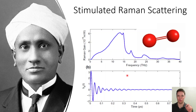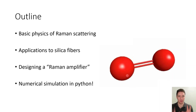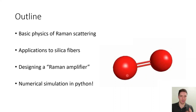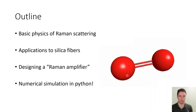In this video, I'm first going to go over the basic physics of the Raman effect using the humble H2 molecule as a reference point. Then we're going to expand that model to the case of an amorphous silica glass lattice, and then we're going to see how to design a fiber optic amplifier that exploits the Raman effect. Finally, we're going to see a numerical model of this amplifier implemented in Python, so stay tuned for that.